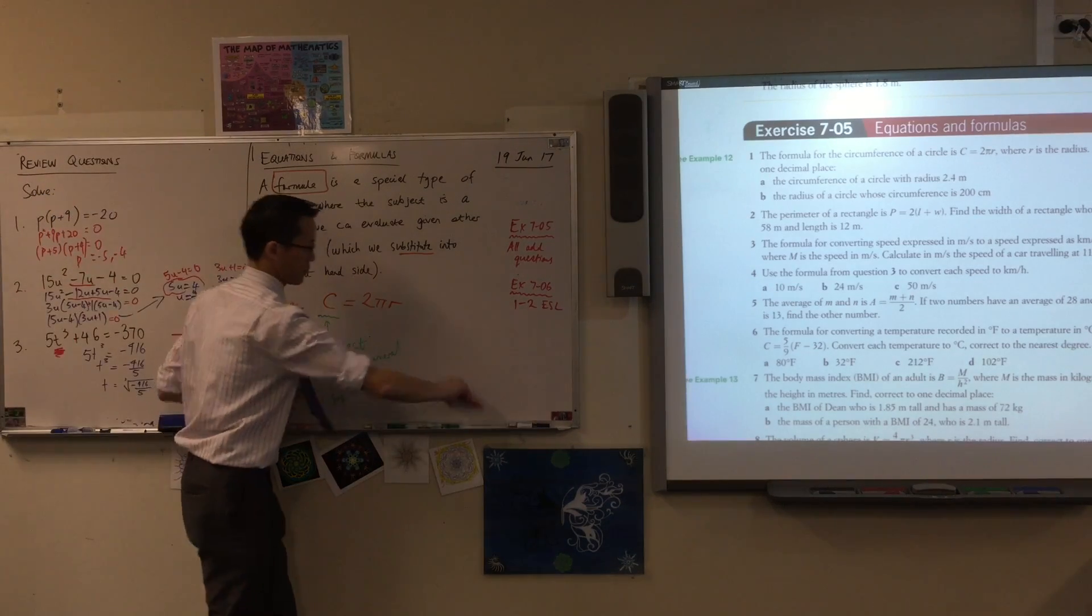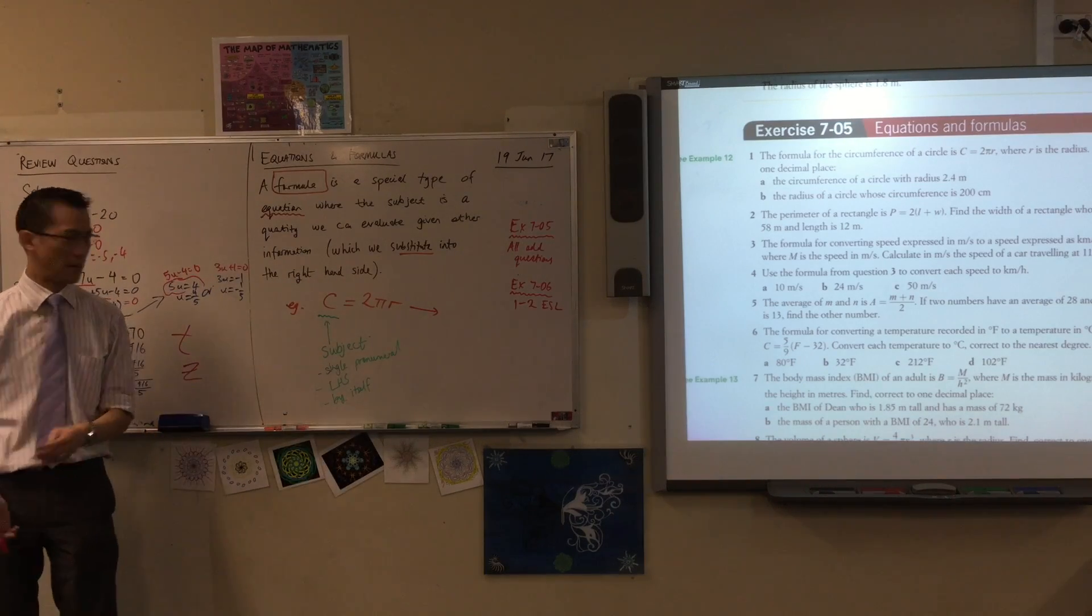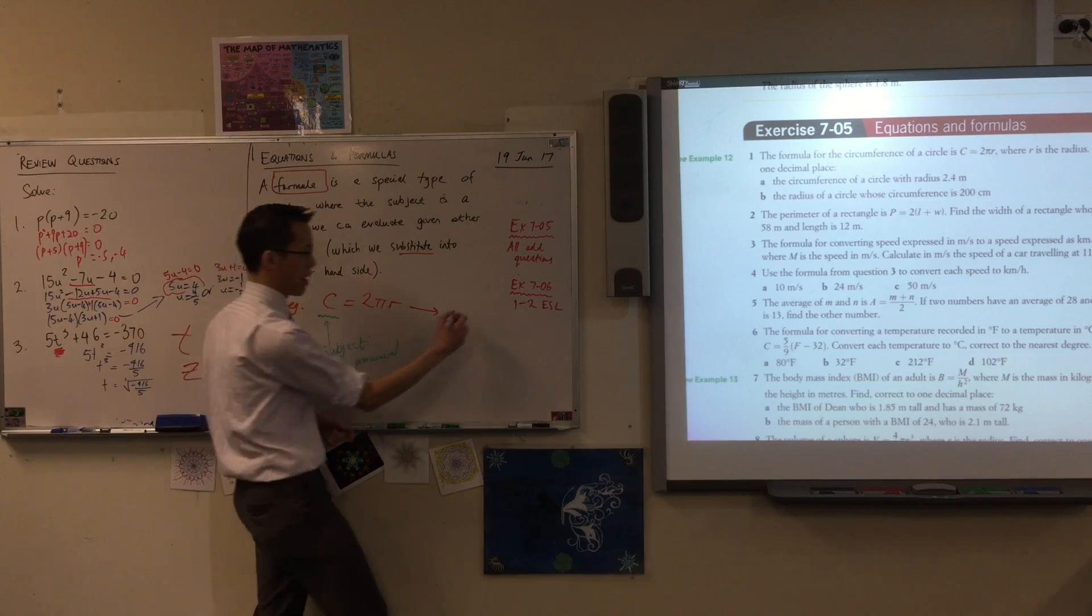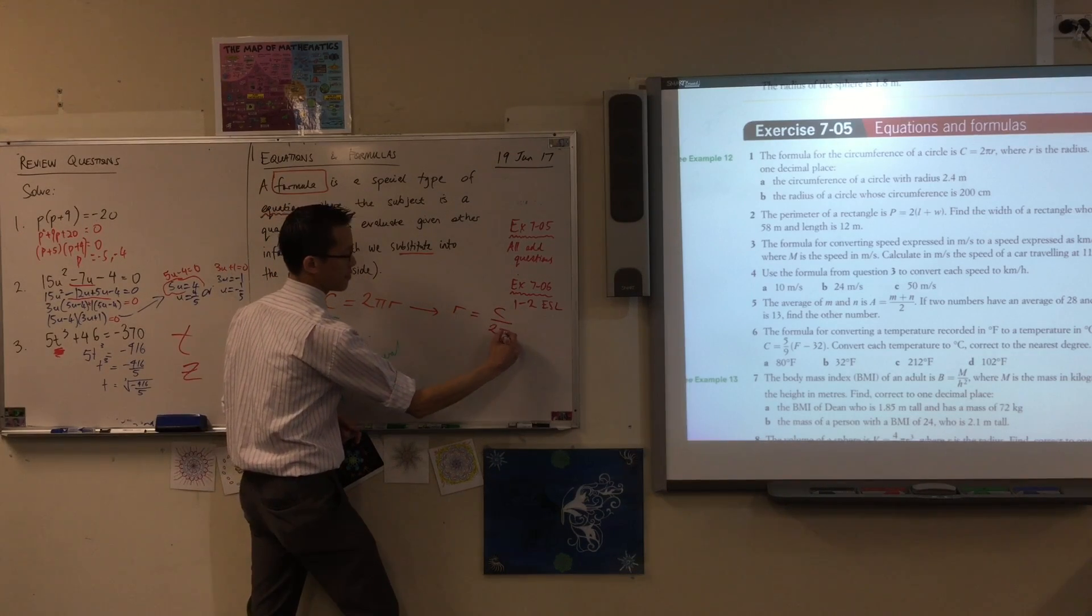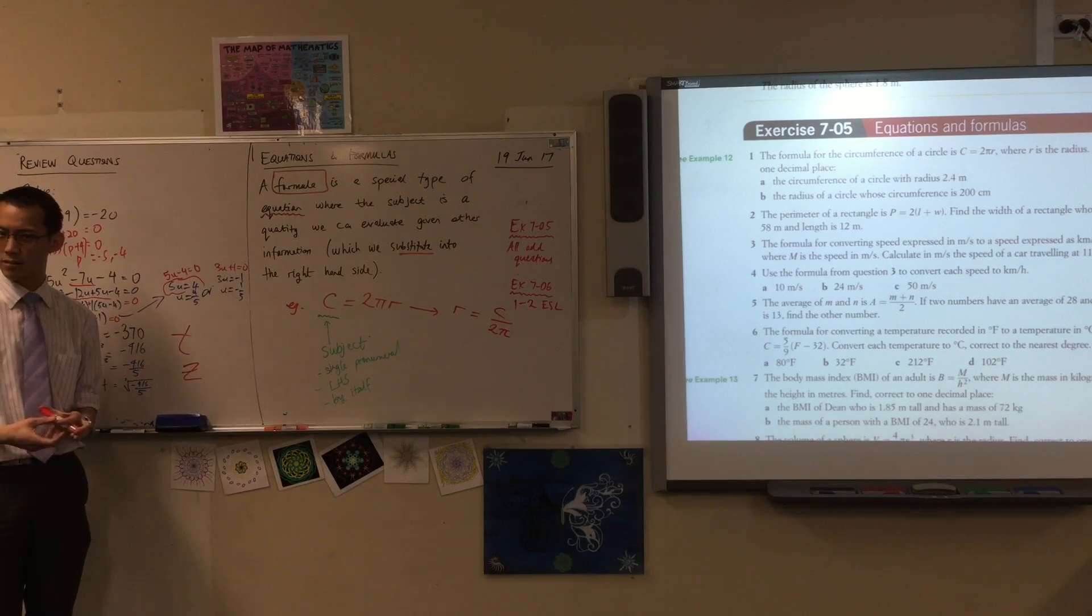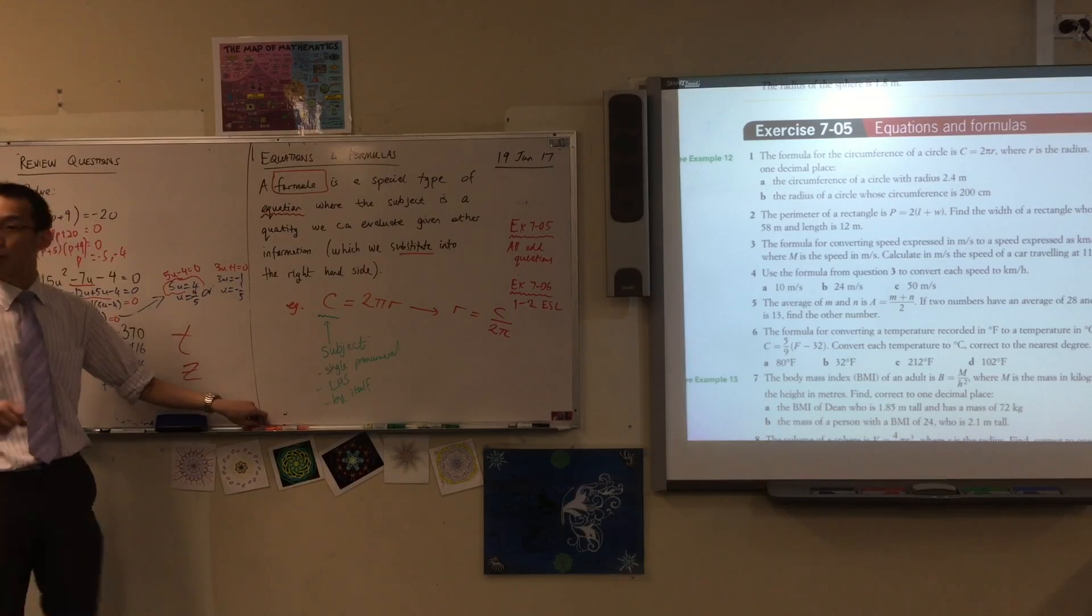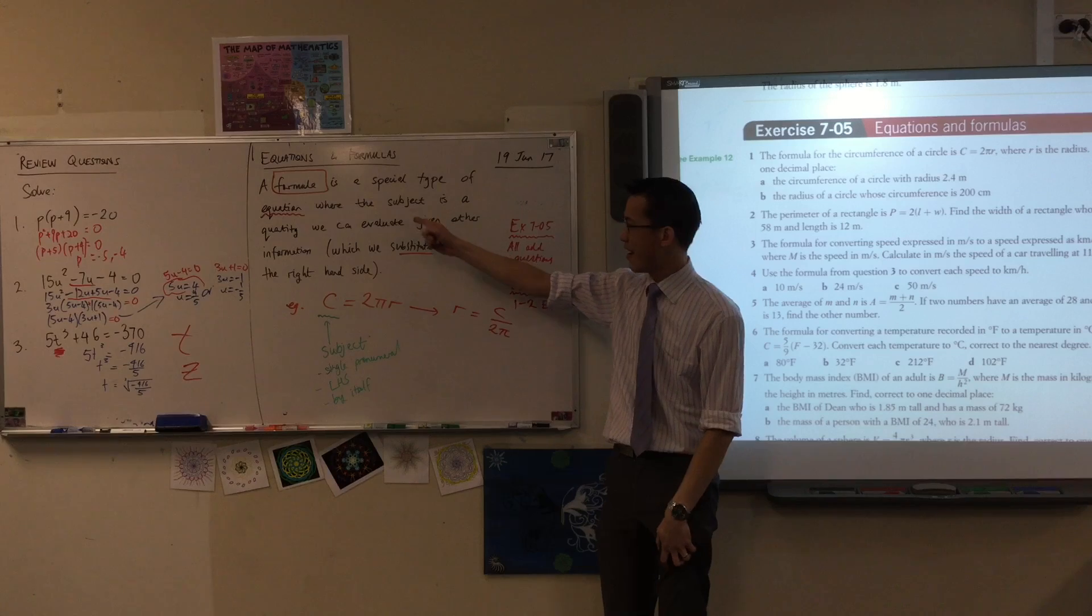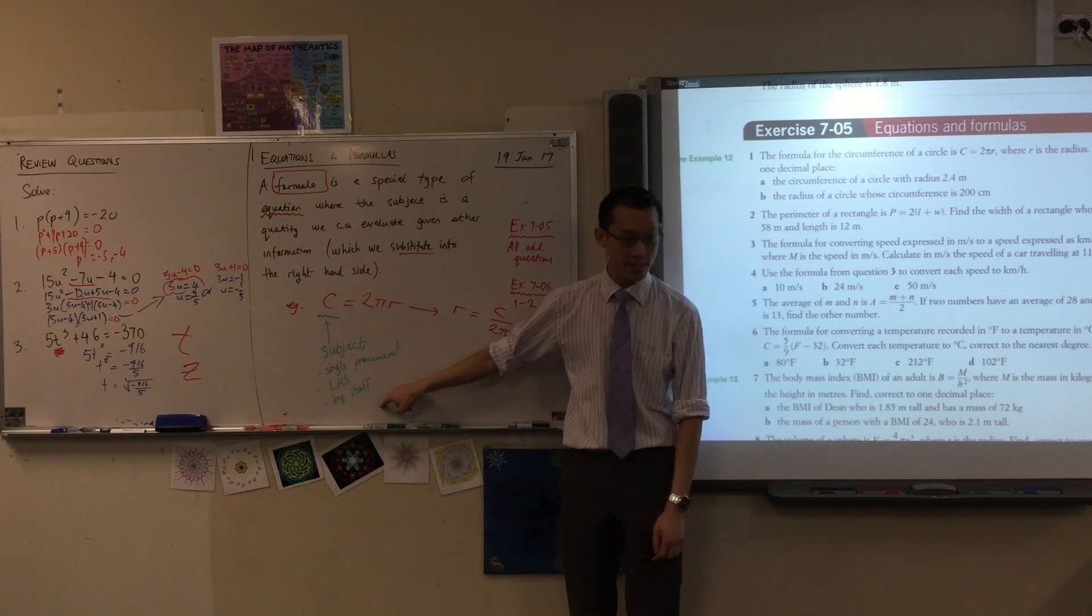So for example, you could contrast this to a very similar formula, but one that's backwards. So if I divide both sides by 2π and then rearrange, I'll get this. Do you agree that that's true? What have I done to both sides? I have divided by 2π. Okay, so this is another formula. It's still a formula.